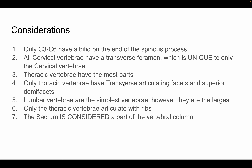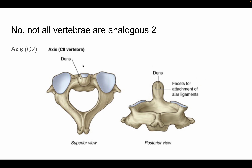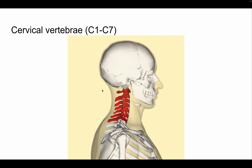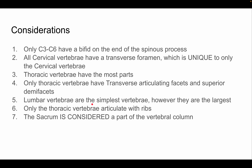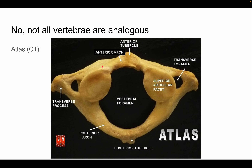Some important considerations about vertebrae: only C3 through C6 have a bifid on the end of the spinous process — the spinous process ends in a peach-like shape with two lobes, which we call a bifid. Sometimes other vertebrae may also have a bifid, but it's a more advanced topic. All cervical vertebrae have a transverse foramen, which is unique to cervical vertebrae only — that's where the vertebral artery runs through.